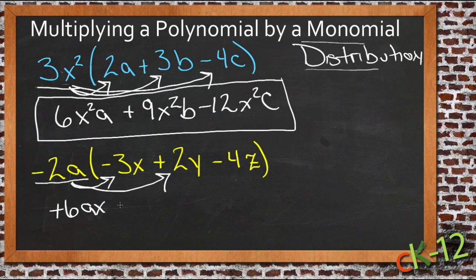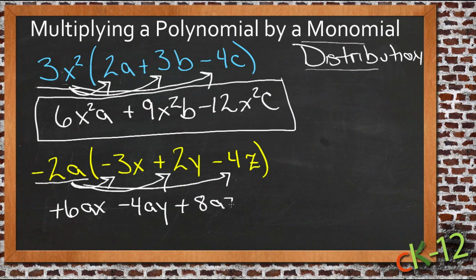And negative 2a times 2y will be negative 4ay. And finally, negative 2a times negative 4z will be positive 8az.